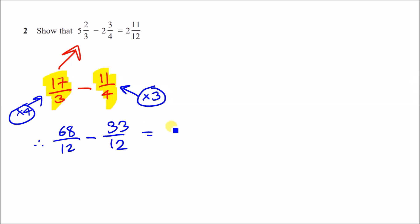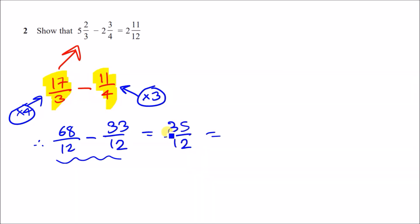Now tidy up: 68 take away 33 gives 35 over 12. The last step is to convert to a mixed number. 12 into 35 goes exactly two times with a remainder of 11, so the answer is two and eleven-twelfths. You can also verify this with a calculator.